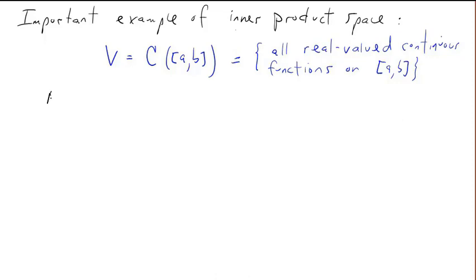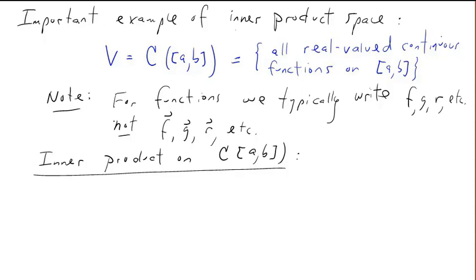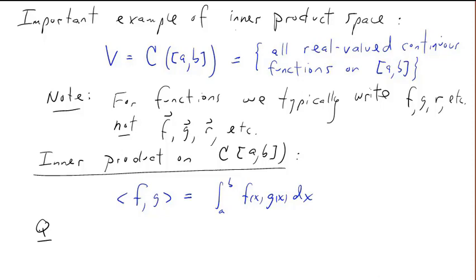For functions, we typically write just the function letter without arrows on top. Here's the definition of the inner product on the vector space of continuous functions: the inner product of f and g equals the integral from a to b of f(x) times g(x) dx. Recall that you can always integrate a continuous function, and if f and g are both continuous then f(x)g(x) is continuous, so this definition makes sense.